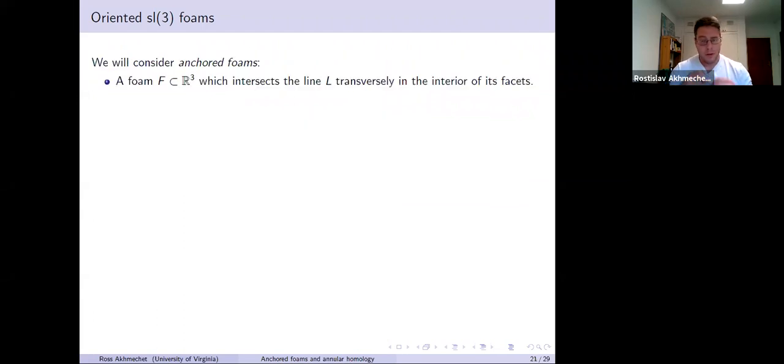We consider this in the annular setting, so we consider anchored foams. It's a foam as before embedded in R3. It intersects the line possibly, but if it does intersect it, it intersects it in the interior of the facets. The two-dimensional sections are transverse. And as before, these intersection points, these anchor points, have to each have a label. But now it's in either one, two, or three.